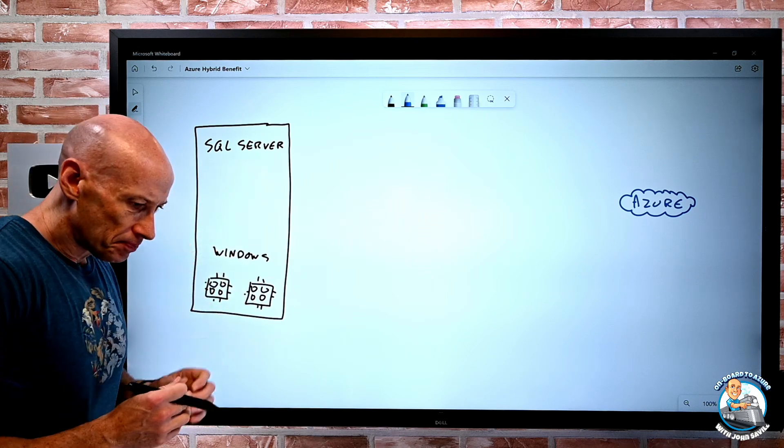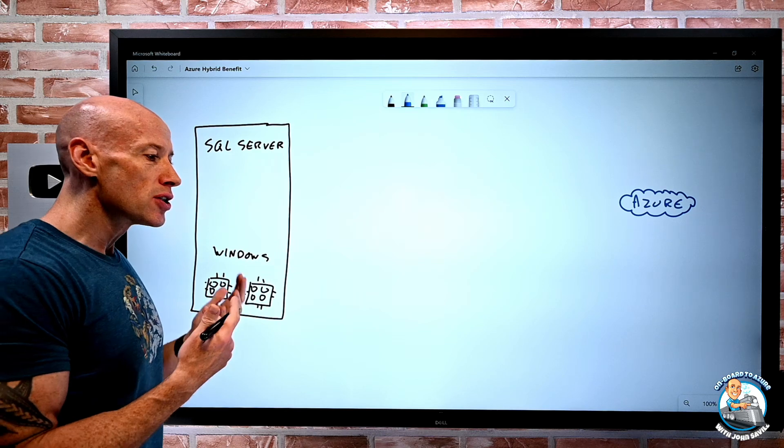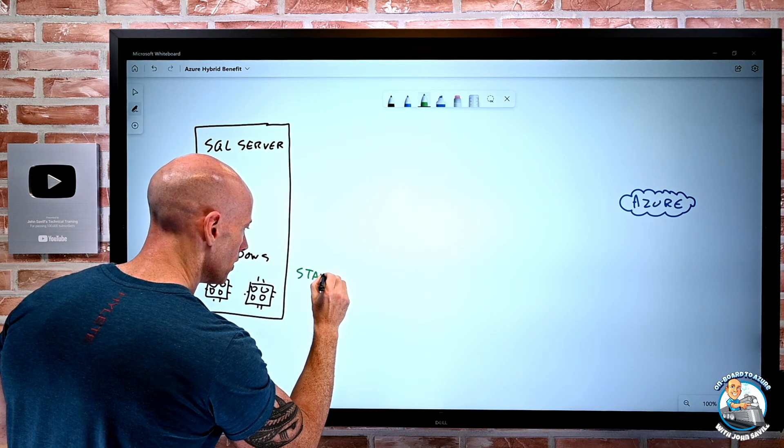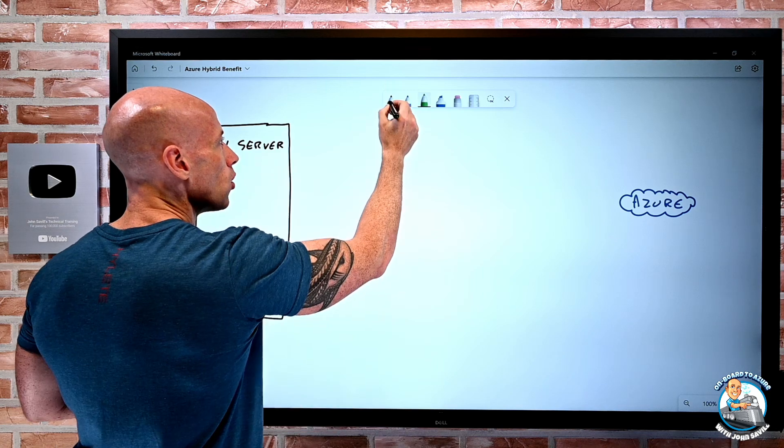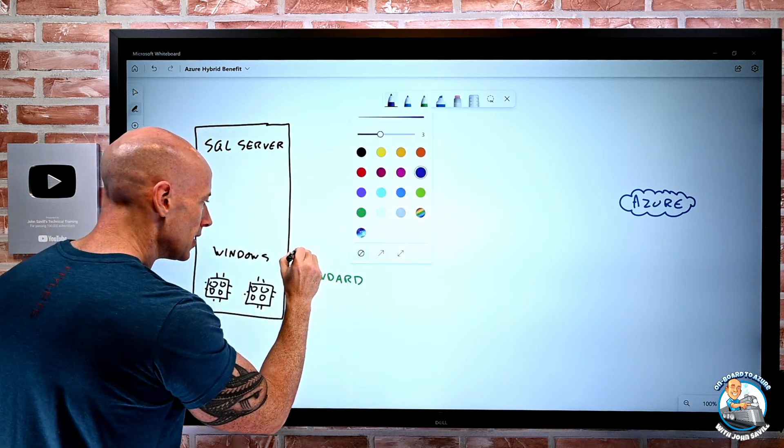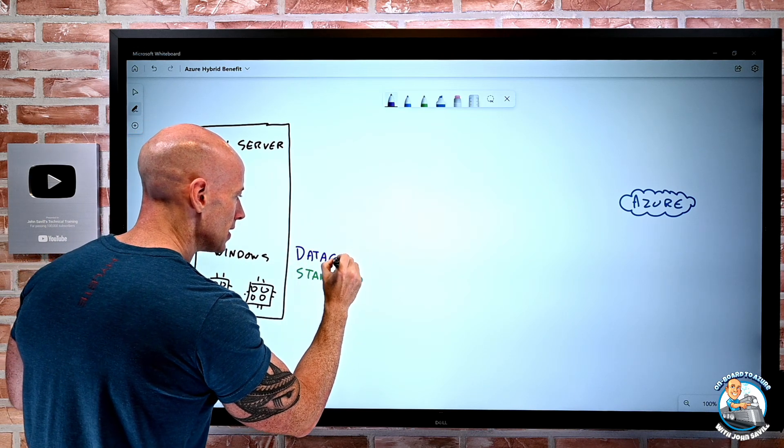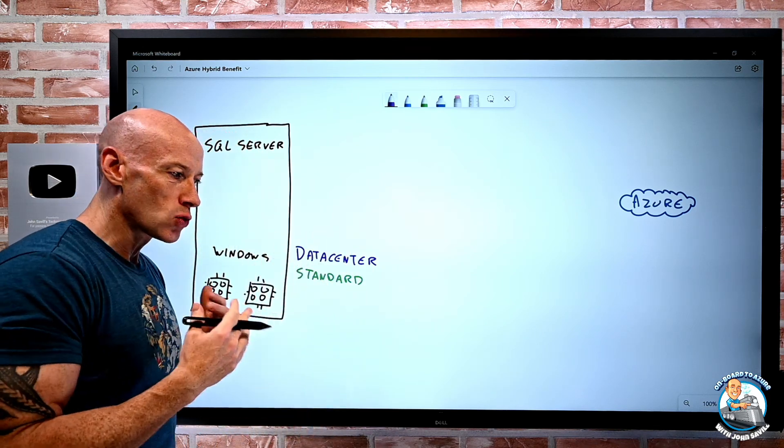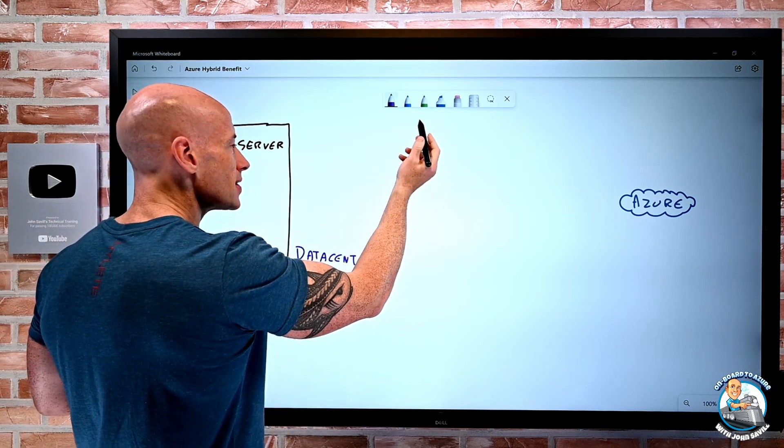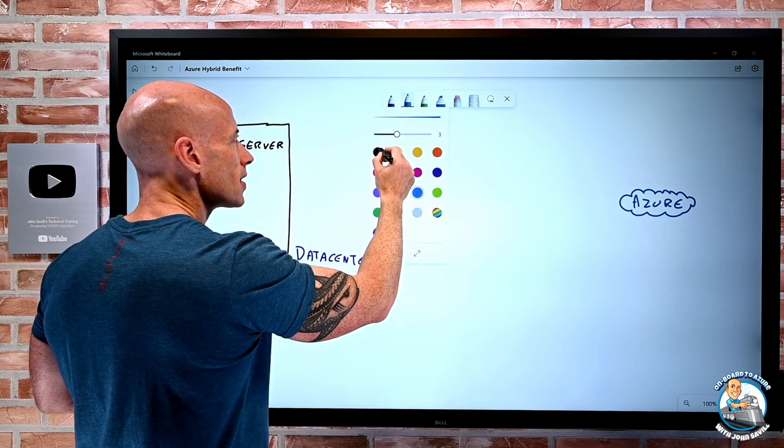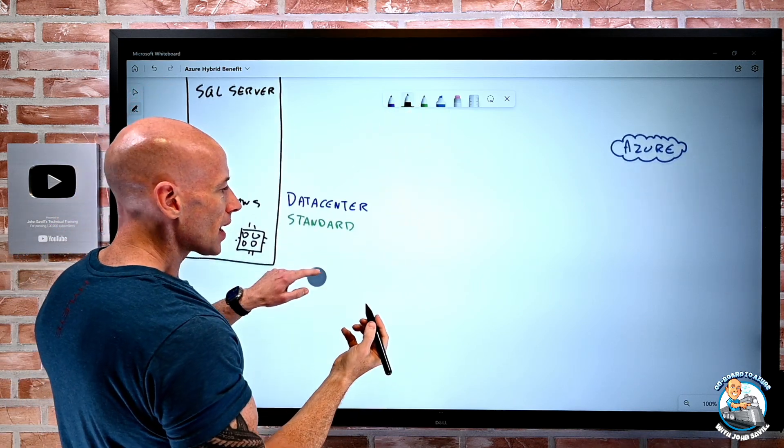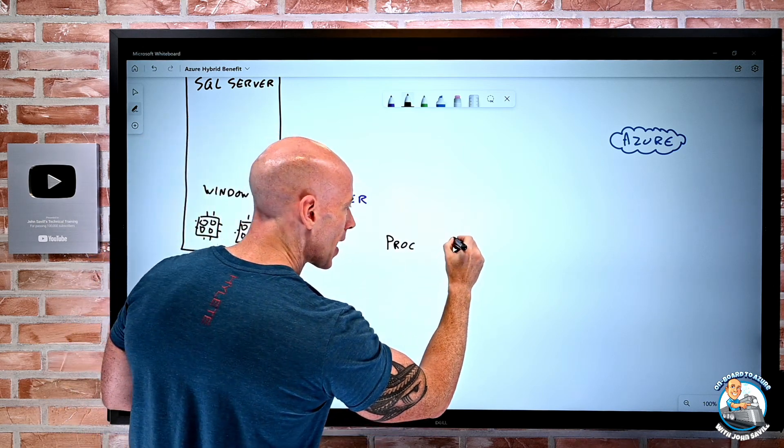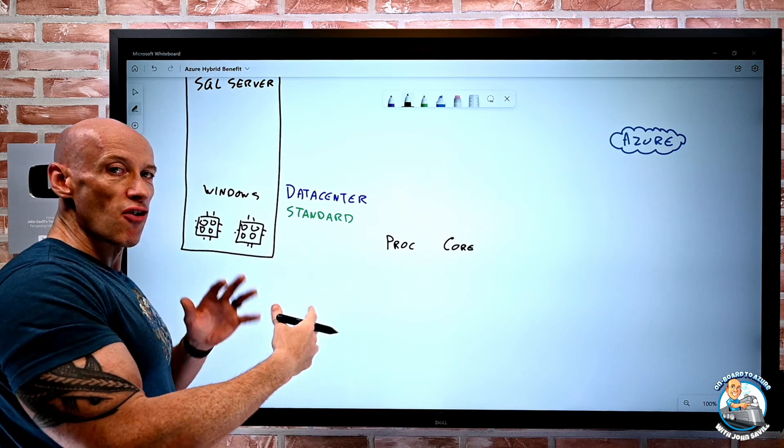So let's start with Windows. We have two different versions available to us. We have standard, but then we also have datacenter. And the reason I'm separating this is there are some different rights we have as we go through this. Now what I can do with these licenses is I can purchase them on premises either at a processor level or more recently we think about a core level, and I would buy a certain number of packs of these.